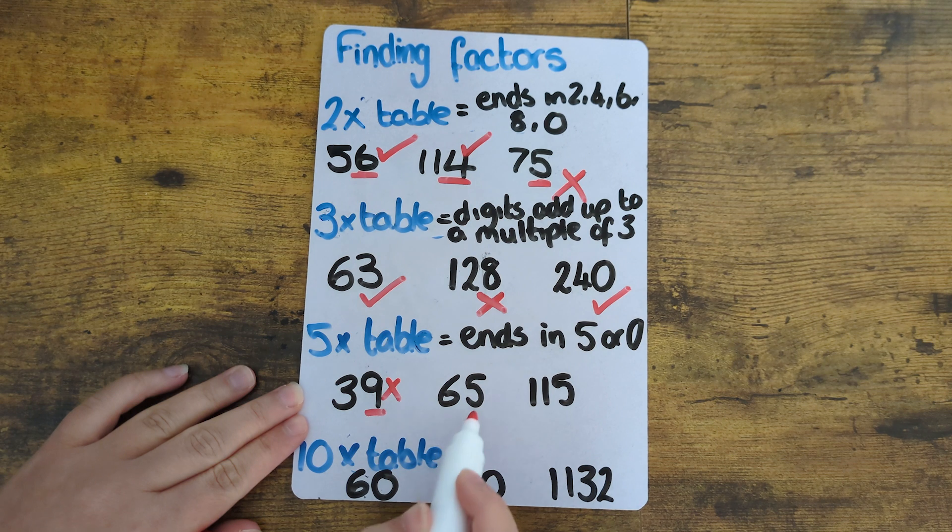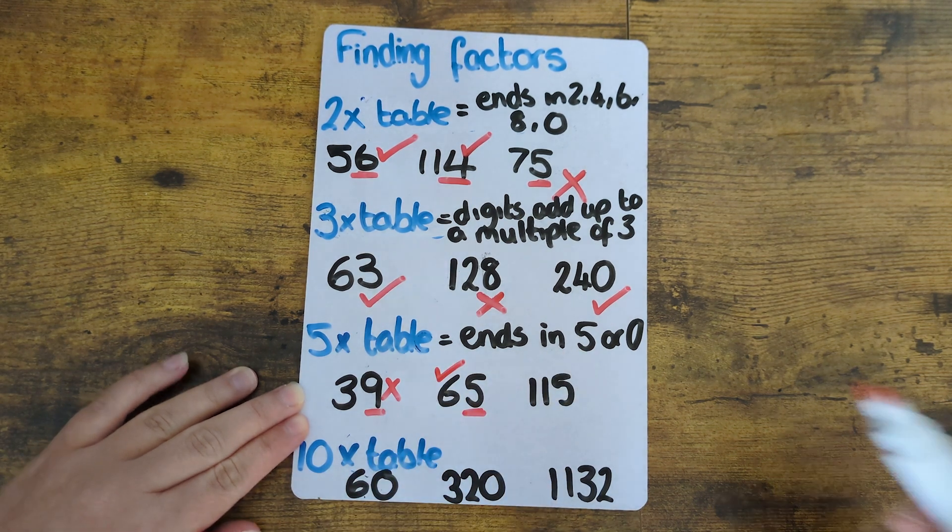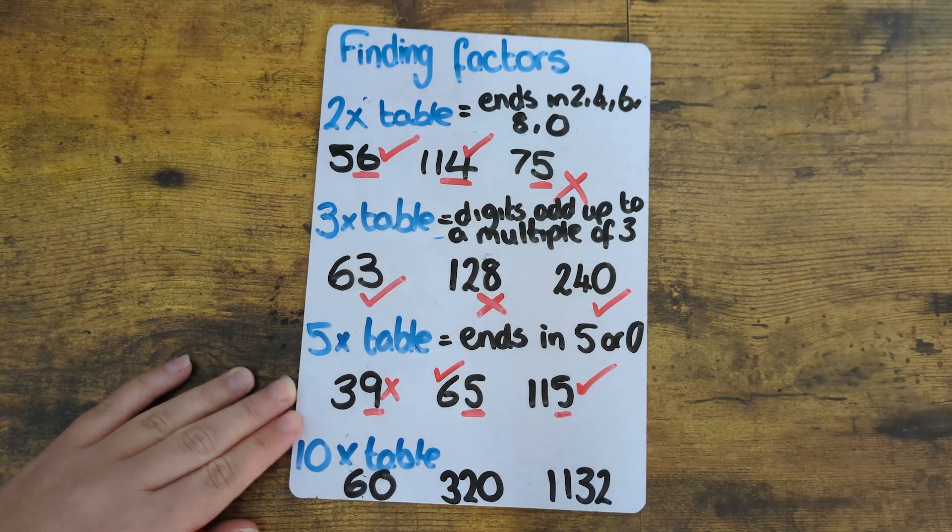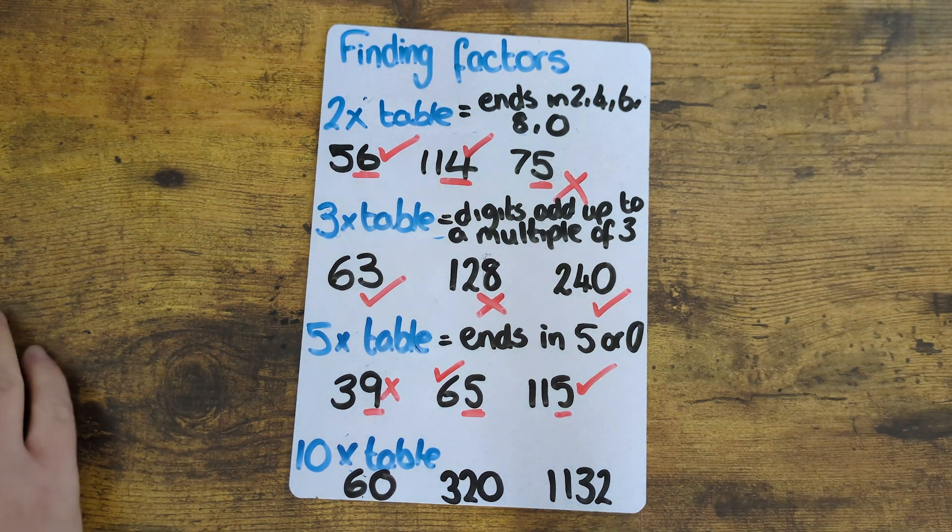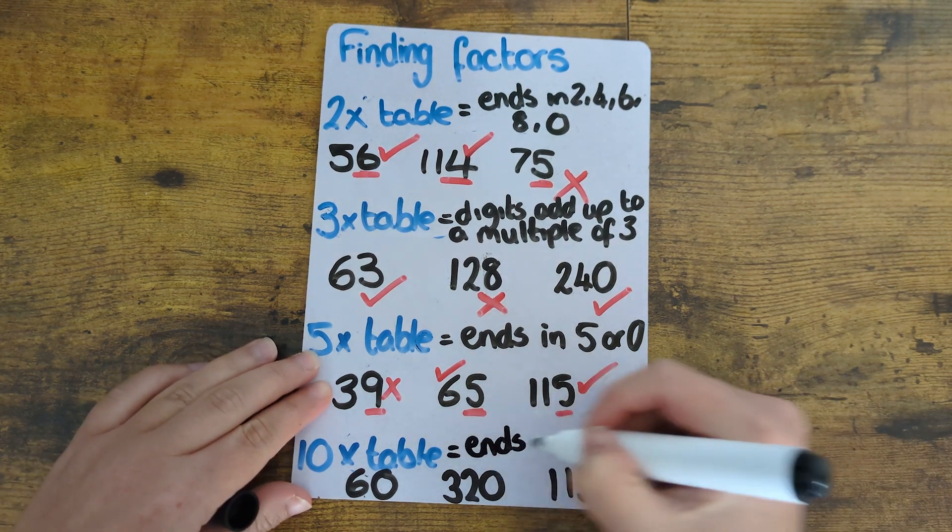65 ends in a five so that will be in the five times table and 115 also ends in a five so that will be in the five times table and then the ten times table all the numbers end in a zero.